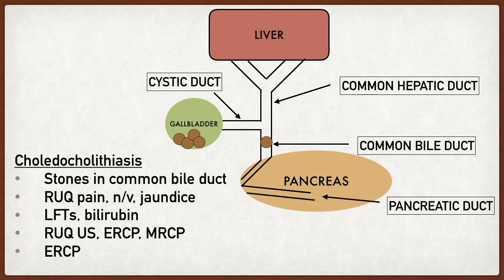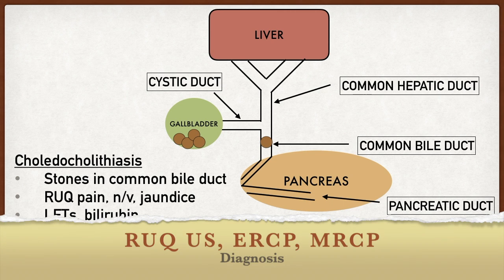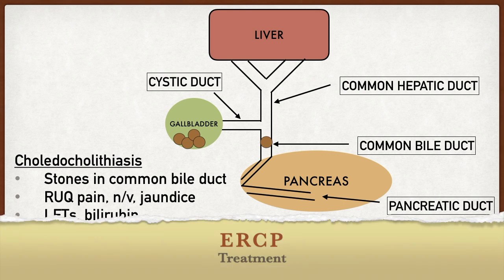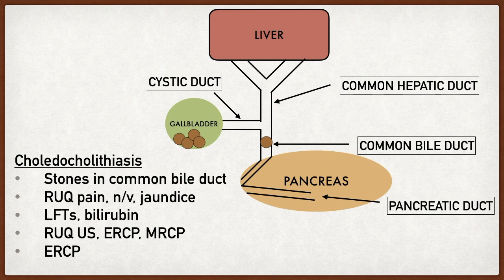To diagnose choledocholithiasis, you can try a right upper quadrant ultrasound, though it can be more challenging to see a stone in the common bile duct than in the gallbladder. You may also appreciate common bile duct wall thickening. If ultrasound can't definitively diagnose it, you can do an ERCP or MRCP. ERCP is useful because it's also the treatment — you go in endoscopically and if you see the stone in the common bile duct, you can endoscopically remove it.